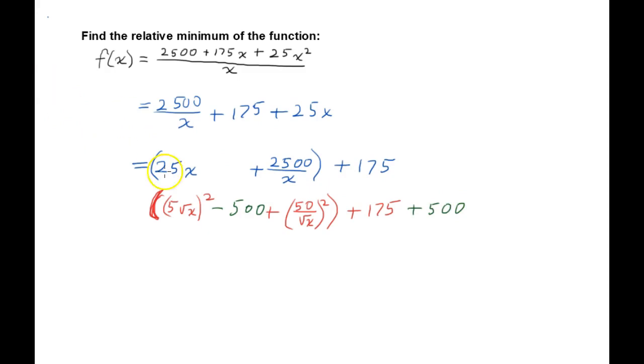Because again, I don't want to change any values of this function. This function is still all equal. So I subtracted 500 here and added 500 here, and I know I kind of took a leap here. Now let me show you what this looks like when it's factored. I'm going to factor this as 5 square roots of x minus 50 over the square root of x quantity squared. Now over here I've got plus 675.